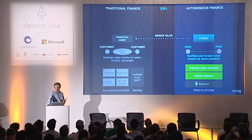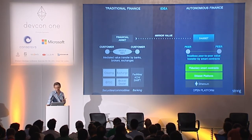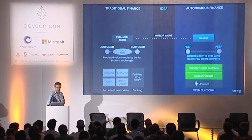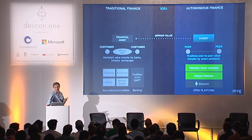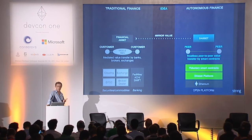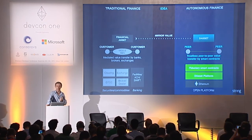Looking at the basic architecture: traditional financial assets are underpinned by clearing systems, exchange systems, the DTCC, broker-dealers, and banks. It's a very complex, slightly antiquated infrastructure. When people transfer or trade these assets, it goes through a whole series of middlemen — really just two customers transferring assets through that whole system.